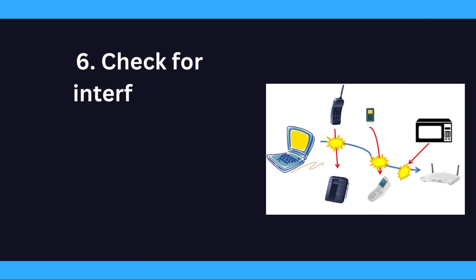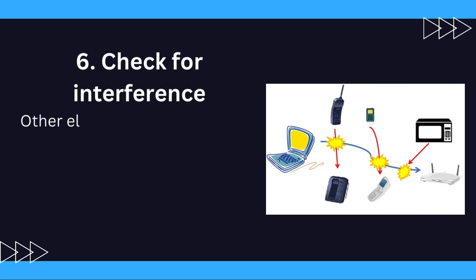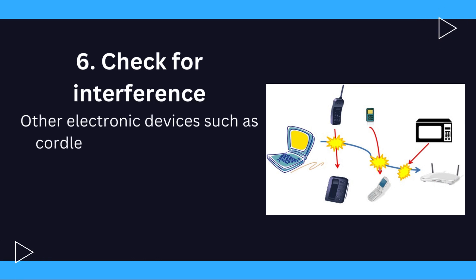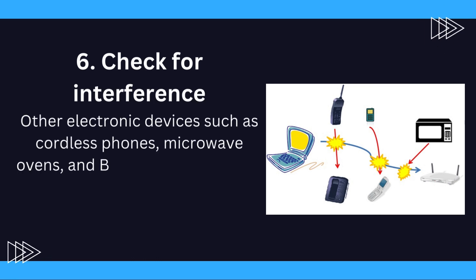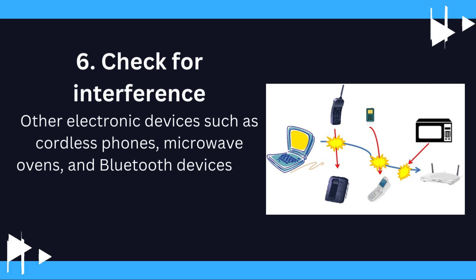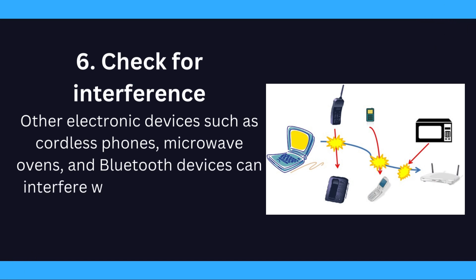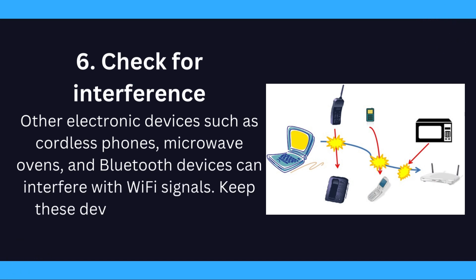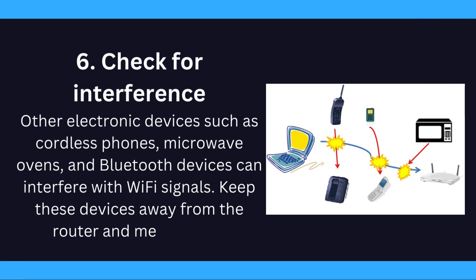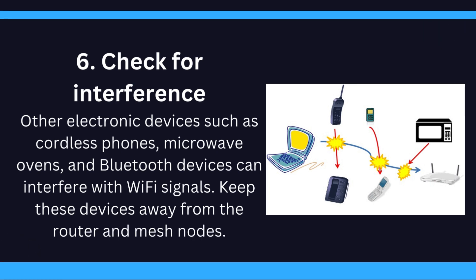6. Check for interference. Other electronic devices such as cordless phones, microwave ovens, and Bluetooth devices can interfere with Wi-Fi signals. Keep these devices away from the router and mesh nodes.